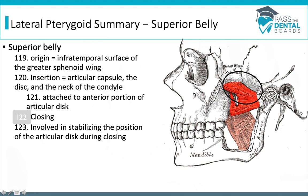The origin of the superior belly is on the infratemporal surface of the greater sphenoid wing. The insertion goes back right towards the TMJ where the articular disc is — the superior belly attaches to the anterior portion of the articular disc and also to the neck of the condyle. Because it's attached to that disc, it stabilizes the position of the articular disc during closing, like the reins on a horse, keeping the disc where it should be and not allowing it to slip too far backward.